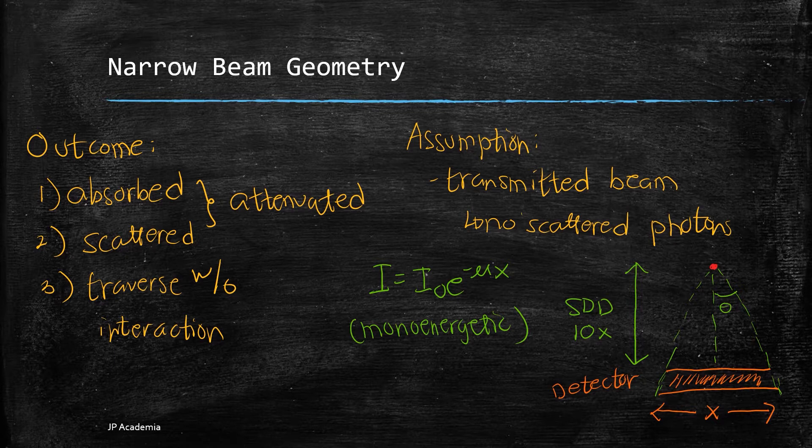We can express the number of penetrating photons in a thin slab with thickness x as shown in this equation. So I is equal to I0 e to the negative mu, which is your attenuation constant coefficient, times x for a narrow beam geometry and mono energetic beam.